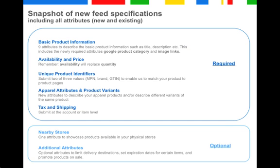Let's quickly recap. You see here a snapshot of the new feed specifications. There is the basic product information, which consists of nine attributes, including our new product category attribute. Then we have availability and price, which are highly critical in regards to our new policy. There are, of course, unique IDs, which you all should be submitting by now. We have five new apparel attributes and additional attributes to describe different variants of the same product. You have to provide accurate data on tax and shipping.